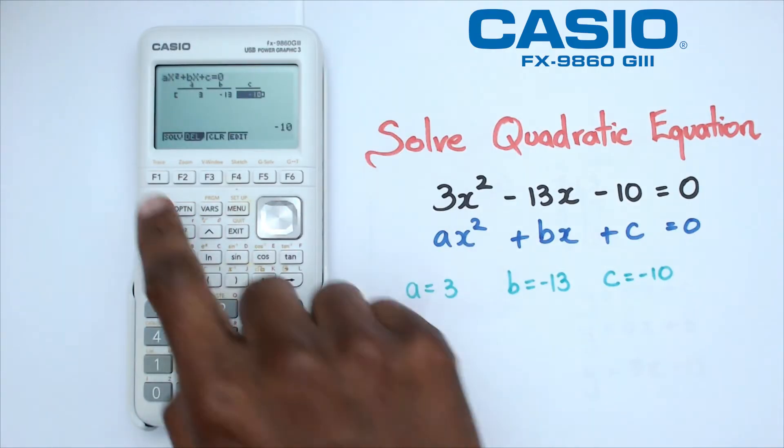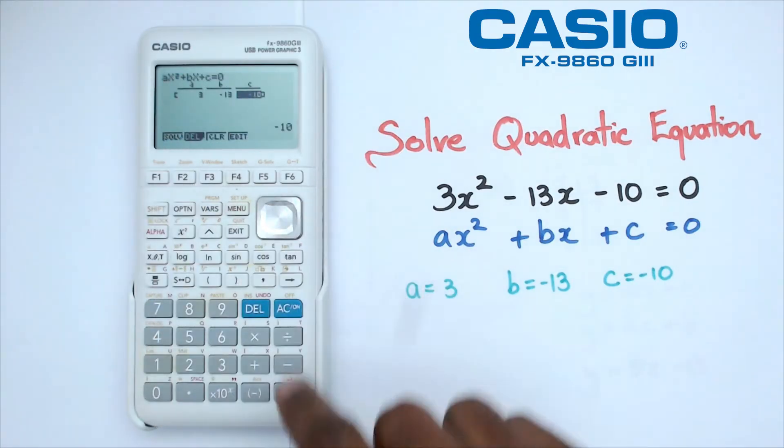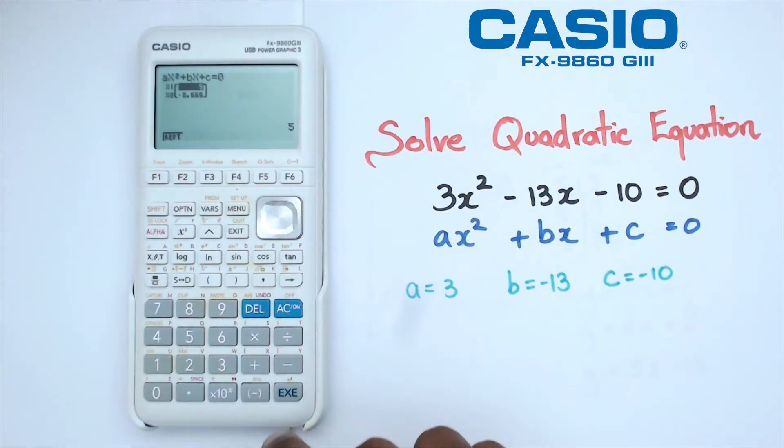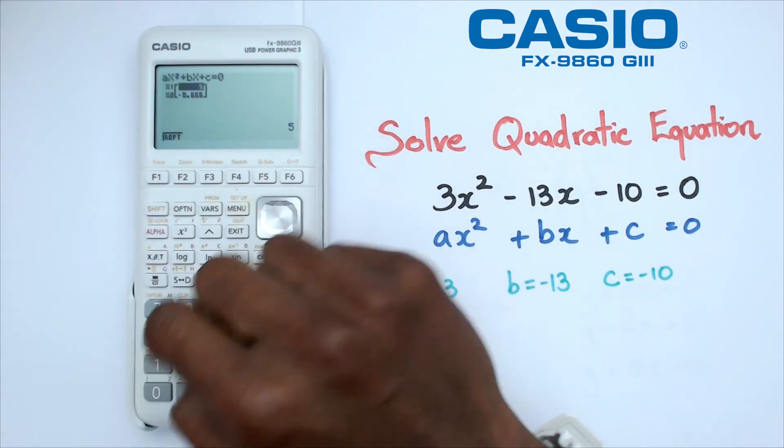You can do two things here. You can actually press F1 for solve or you can just press enter again, and what's going to happen is it's going to give you two answers.